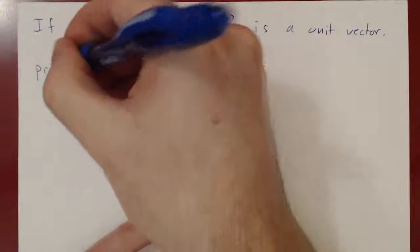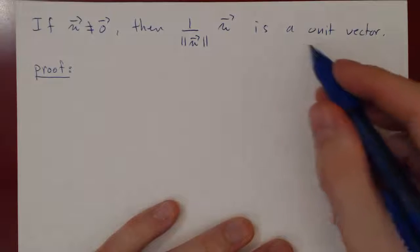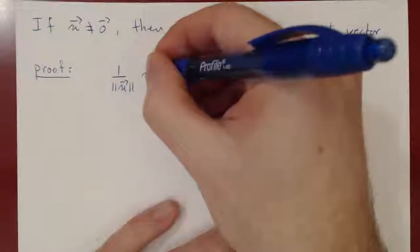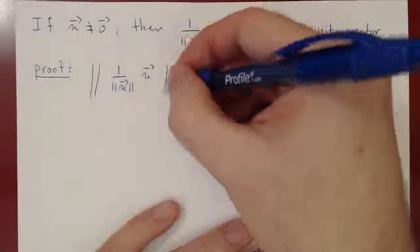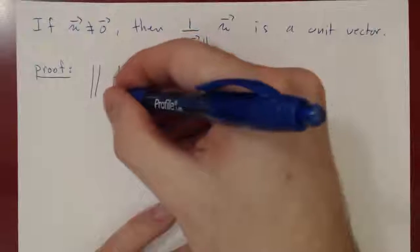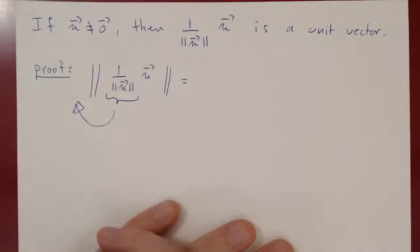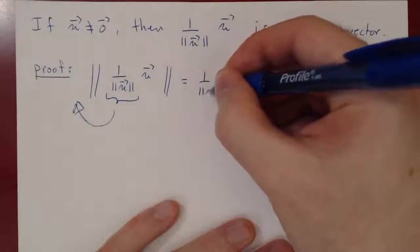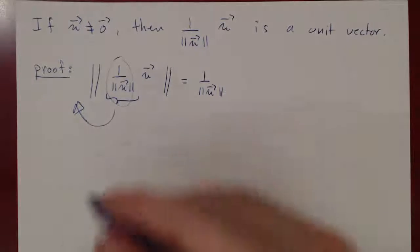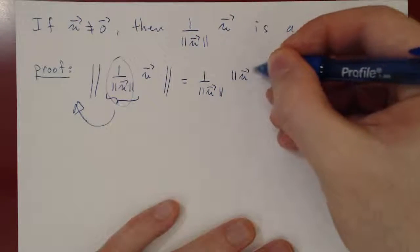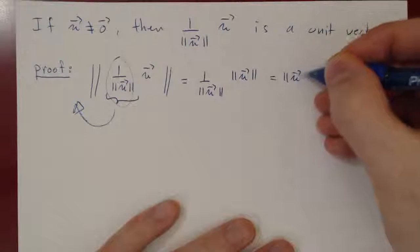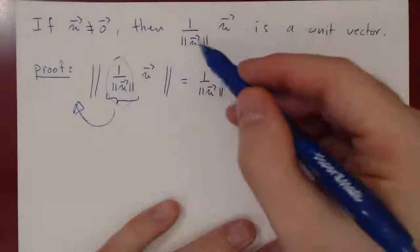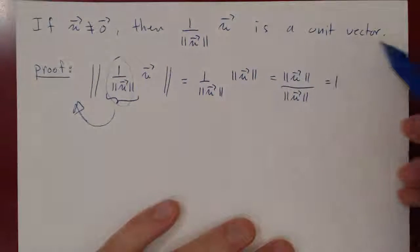Let's prove this — the proof is just one line. How do we prove that a vector is a unit vector? Its length must be one. So we take the norm of (1/||u||) times u. By the property of the norm, we can move constants outside and put them in absolute value — but since the norm is positive, we don't need the absolute value. We get one over the norm of u, times the norm of u. But norm of u over norm of u is just one. And that's our proof.